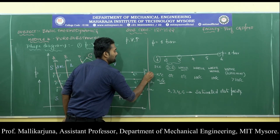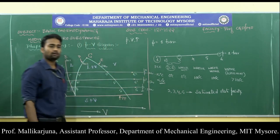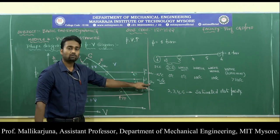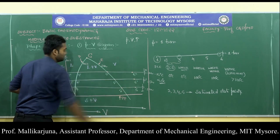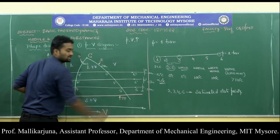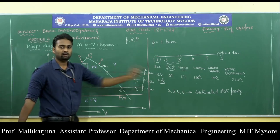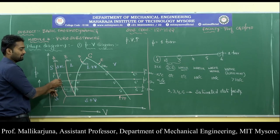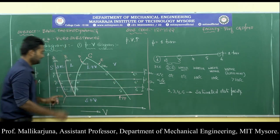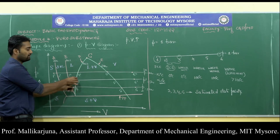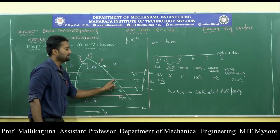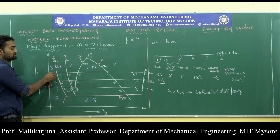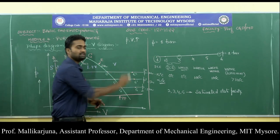If I take similar pressure lines — P-dash at, say, 5 bar and P-double-dash at 20 bar — increasing pressure means moving up on the y-axis. At 5 bar I get points 1-dash through 6-dash, and at 20 bar I get points 1-double-dash through 6-double-dash, all telling the same story of phase change. At 5 bar, 1-dash is less than the saturation temperature and 6-dash is greater than the saturation temperature. The same applies at P-double-dash with corresponding numbered points.